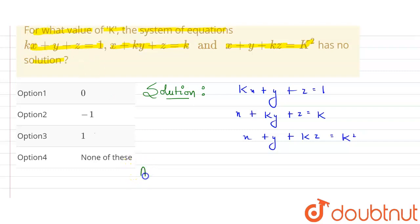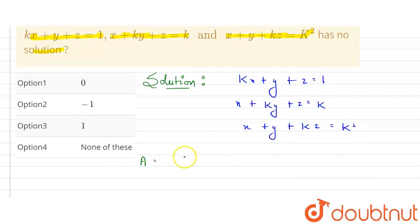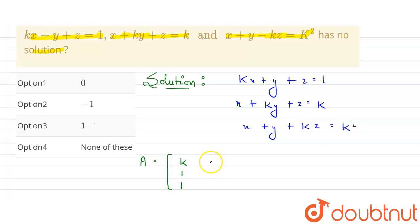Matrix A is written with the coefficients of x, y, and z. The first row is k, 1, 1; the second row is 1, k, 1; and the third row is 1, 1, k. This is the matrix A.